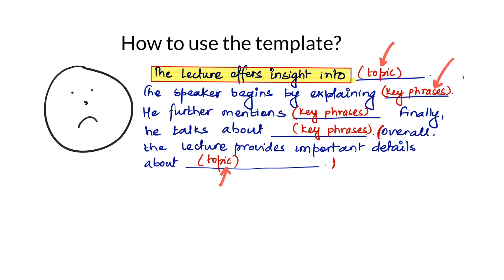Where do we get the topic and key phrases from? You will get this information from the recording. While you are listening to the recording, try to note down a few important phrases. When I talk about phrases, people often feel confused and ask what's the difference between a key phrase and a keyword. Let me show you now using an example sentence: 'the democracy of India is in progress for the last hundred years.'